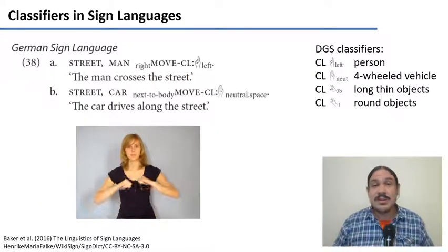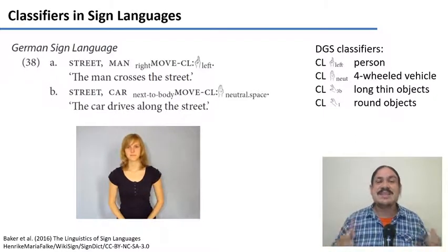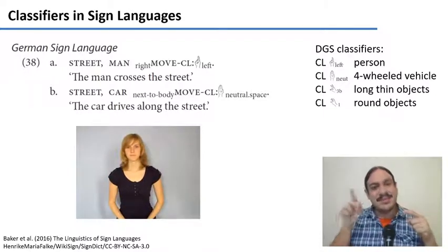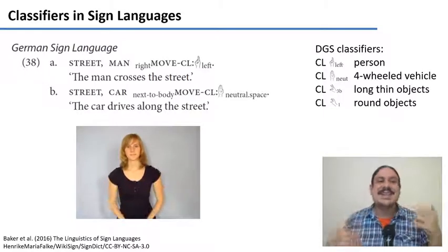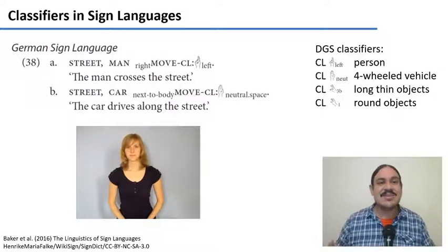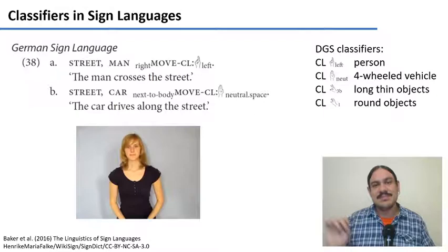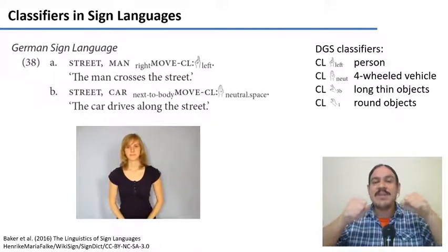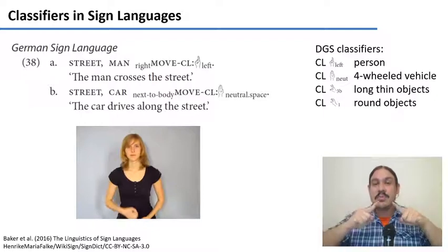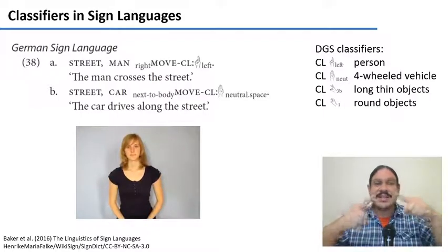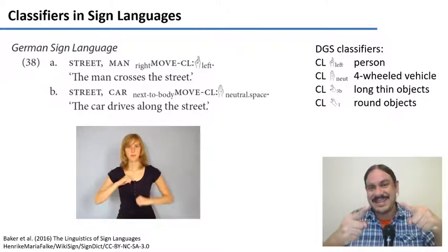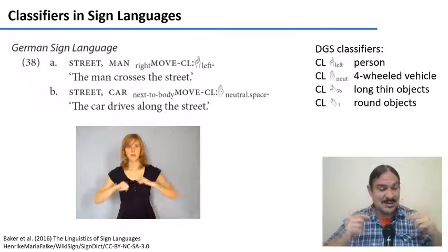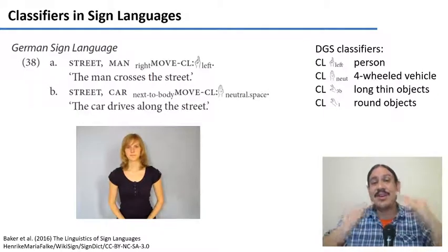Much of the morphology we have studied is also present in sign languages. This is a very cool example of classifiers. In Japanese, for example, you have to say 'one cylinder of pencil', 'one human of student', or 'one machine of car'. German sign language does the same thing. The sentences 'the man crosses the street' and 'the car drives along the street' both use the verb 'to move', signed like this. You can modify the shape of your hand with classifiers — if you do the motion with fingers extended, this means the motion is performed by a person-shaped object. If you have your palm flat, it means the motion is performed by a vehicle-shaped object like a car.